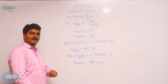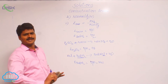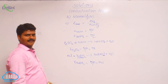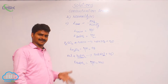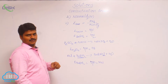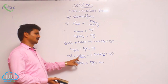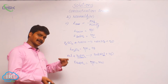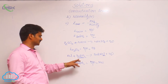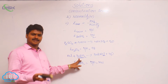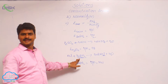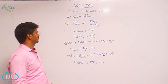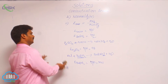Equivalent weight of a substance is not fixed — it is a variable term. But molecular weight of a substance is fixed; NaOH molecular weight is always 40, whatever the reaction or condition. NaOH is a monoacidic base so its equivalent weight may be fixed. But for polyacidic bases like barium hydroxide or aluminium hydroxide, they will have different equivalent weights based on the reaction conditions.